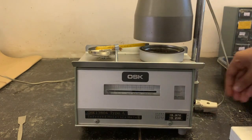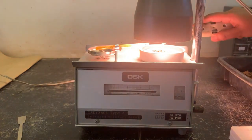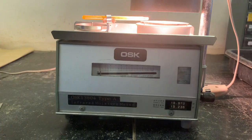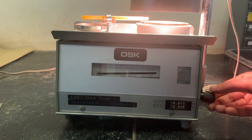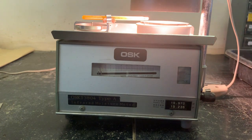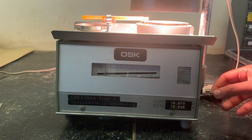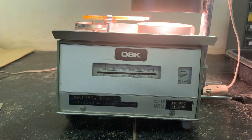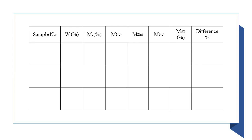Then turn the power switch on. As the sample dries, the balance indicator moves upward. Make zero balancing by sliding the indicator with the knob. When the balance indicator stops completely, it means the sample has been fully dried. And now we can directly read the moisture percentage of the sample on the scale.